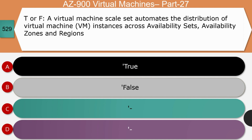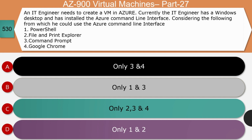Question 9: True or false — a virtual machine scale set automates the distribution of VM instances across availability sets, availability zones, and regions. The right answer is false. A virtual machine scale set automates the distribution of VM instances to a region and within the region to an availability zone — it is not across regions or multiple availability zones.